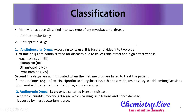In the classification, anti-mycobacterial drugs are mainly divided into two types: anti-tubercular drugs and anti-leprotic drugs. The anti-tubercular drugs are further classified into two types: first-line drugs and second-line drugs.